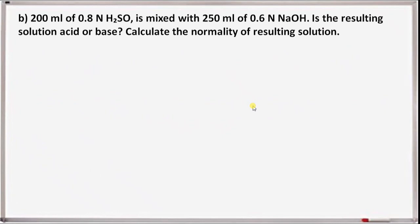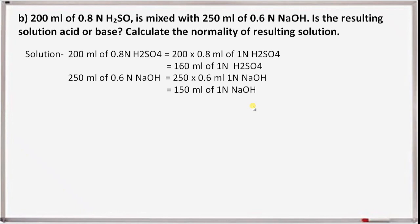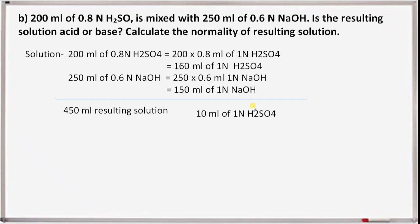Next question 7b: 200 ml of 0.8 N H2SO4 is mixed with 250 ml of 0.6 N NaOH. Is the resulting solution acid or base? Calculate the normality of the resulting solution. 200 ml of 0.8 N H2SO4 equals 200 × 0.8 = 160 ml of 1 N H2SO4. Similarly, 250 ml of 0.6 N NaOH equals 250 × 0.6 = 150 ml of 1 N NaOH. Total volume is 450 ml. Acid remaining unreacted is 10 ml of 1 N H2SO4.